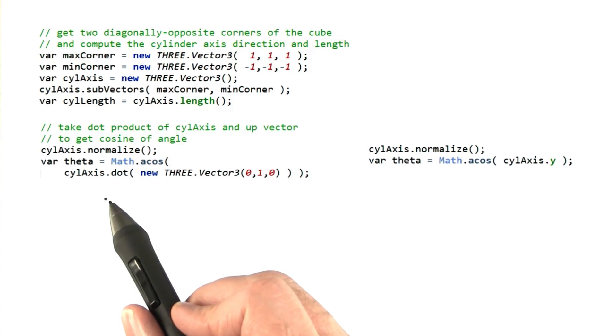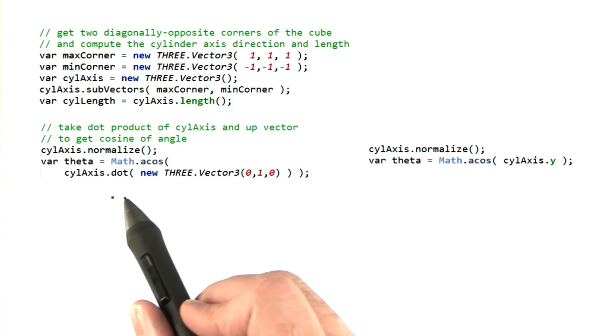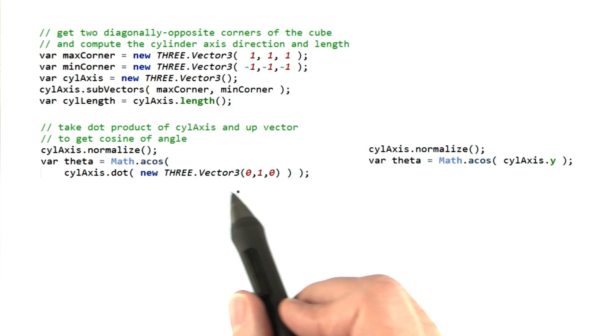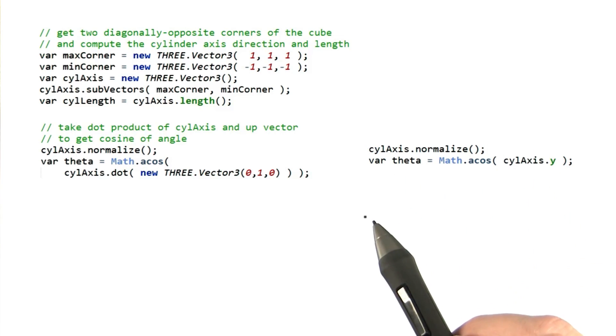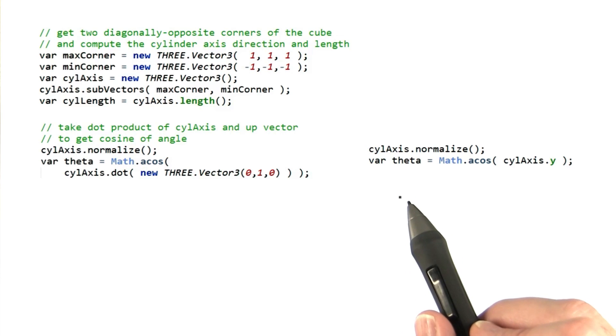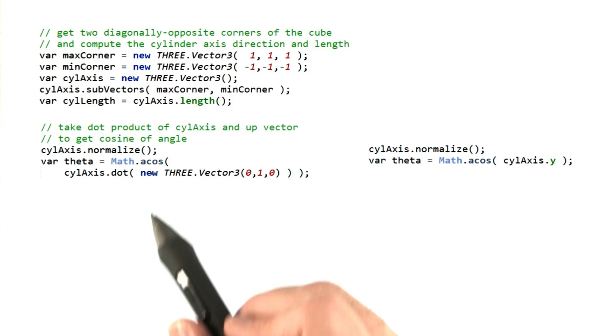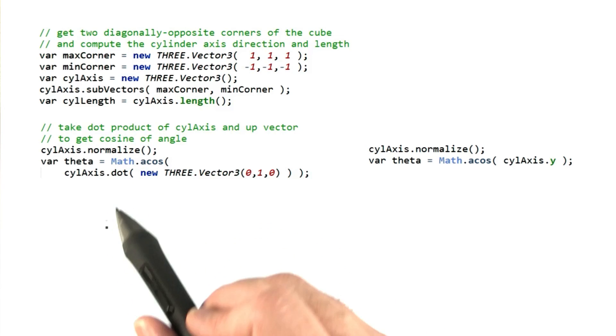Using a dot product is a bit of overkill by the way. Computing a dot product with a y-axis like this is the same as just grabbing the y-component of the cylinder axis. We could have simply normalized and done this like this code here. However, unless this is a critical loop, like we're making a billion of these ornaments, I'd recommend using this first way. If someone reads or modifies this code in the future, the intent is clearer and more general.